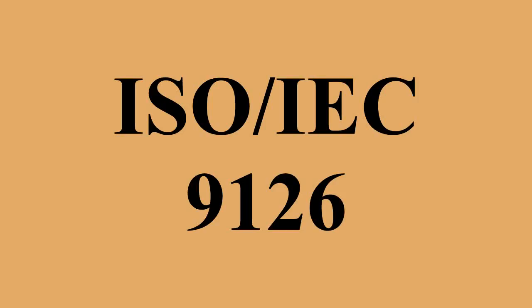ISO IEC 9126 Software Engineering Product Quality was an international standard for the evaluation of software quality. It has been replaced by ISO IEC 25010-2011. The fundamental objective of the ISO IEC 9126 standard is to address some of the well-known human biases that can adversely affect the delivery and perception of a software development project. These biases include changing priorities after the start of a project and not having any clear definitions of success, by clarifying then agreeing on the project priorities and subsequently converting abstract priorities to measurable values. ISO IEC 9126 tries to develop a common understanding of the project's objectives and goals.